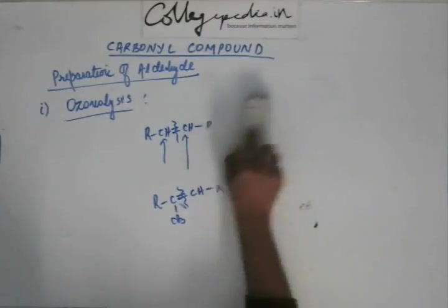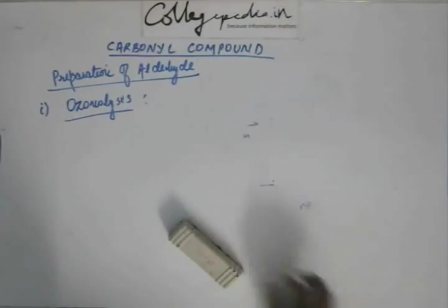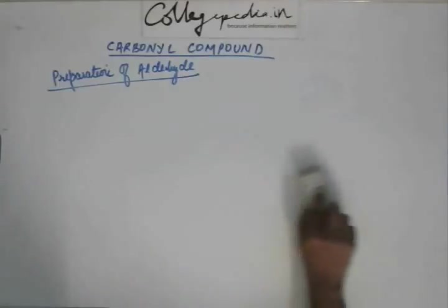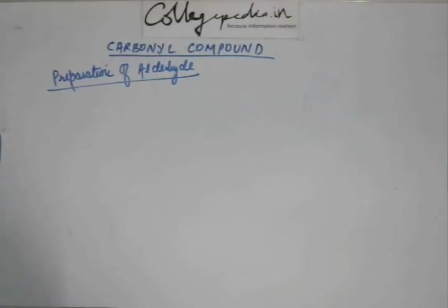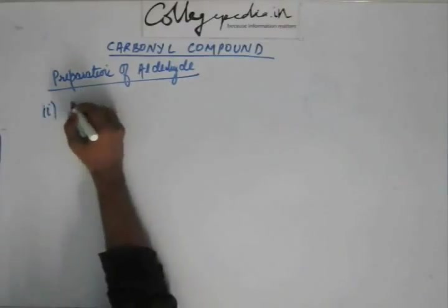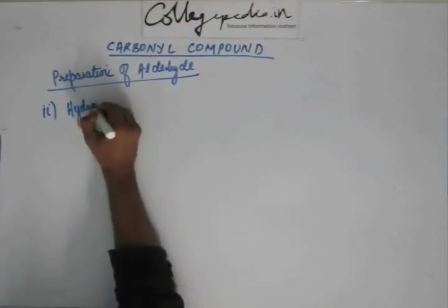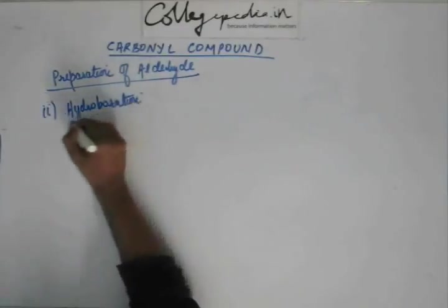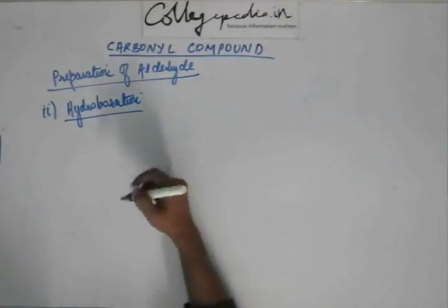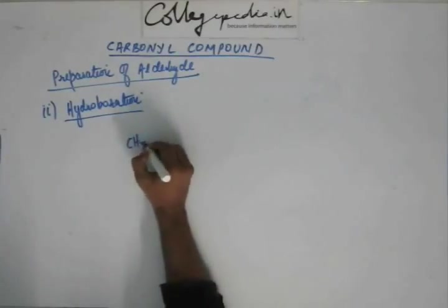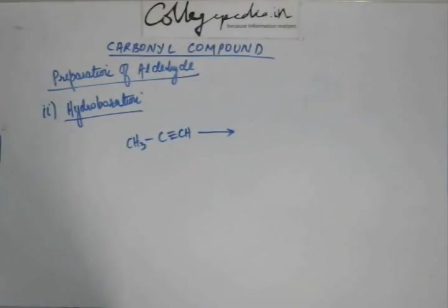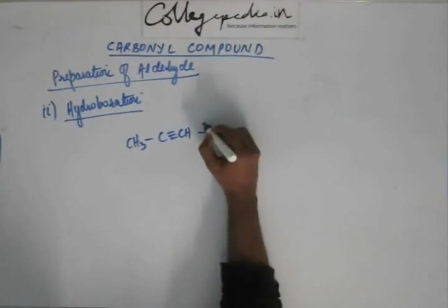So ozonolysis can give you aldehyde depending upon the structure of the alkene. We have seen this reaction, so we are not going to practice any problems here — practice was done earlier; this was recapitulation. Another reaction that we have seen before and will quickly recapitulate before moving to new reactions is hydroboration. If you carry out hydroboration on a terminal alkyne — suppose this is propyne — and carry out hydroboration oxidation.